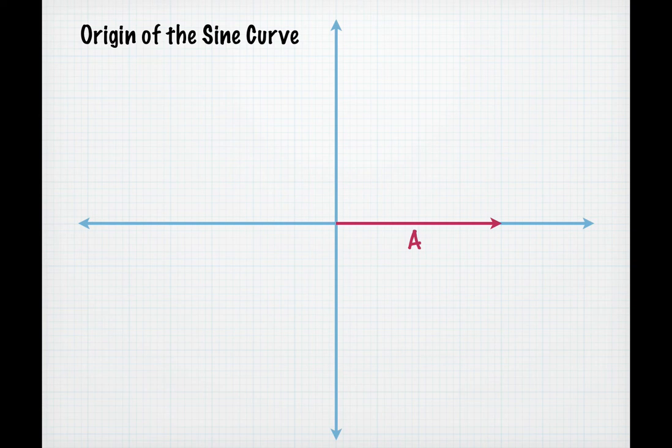Think about an arrow with length A that is laying along the x-axis pointing to the right. Now imagine this arrow rotating counterclockwise with one end at the origin and the other end sweeping out a circle. What we want to do is track the tip of the arrow and look at its y position as it rotates.